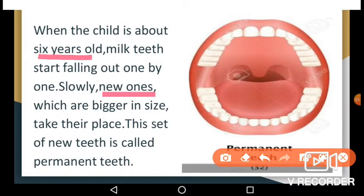The second set of teeth is permanent teeth. When the child is about 6 years old, milk teeth — the first set — start falling out one by one. Slowly, new teeth which are bigger in size take their place, and this set of new teeth is called permanent teeth.